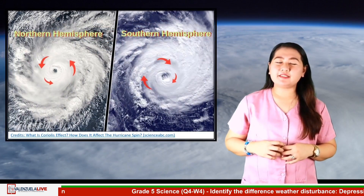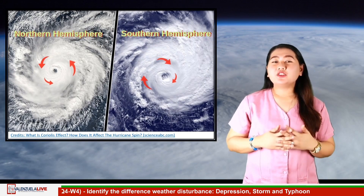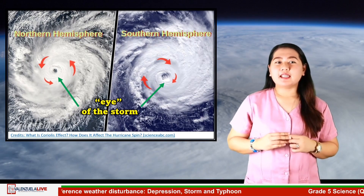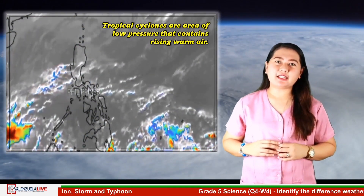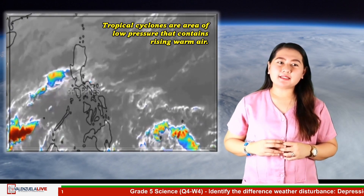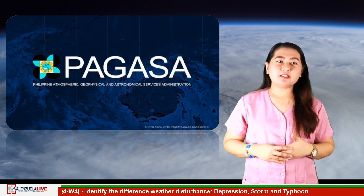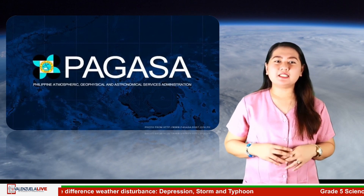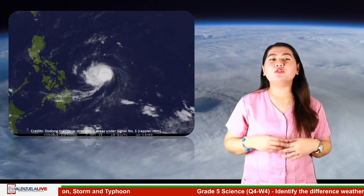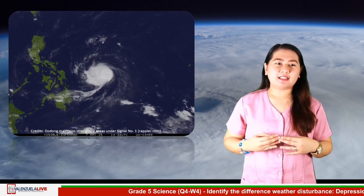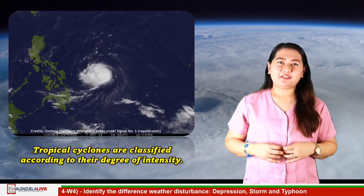A tropical cyclone rotates in a counterclockwise direction around an eye in the northern hemisphere and clockwise direction in the southern hemisphere. The center of the storm or eye is the calmest part — it has only light winds and fair weather. Tropical cyclones are areas of low pressure that contain rising warm air. A cyclone intensifies when it is located over warm tropical waters and weakens as it moves inland. The intensity of tropical cyclones varies, and thus we can classify them according to their degree of intensity.